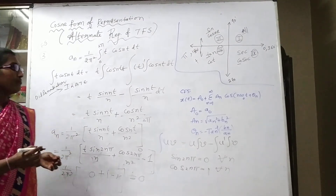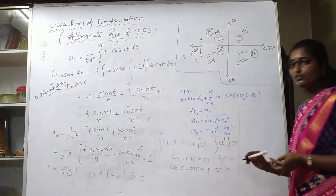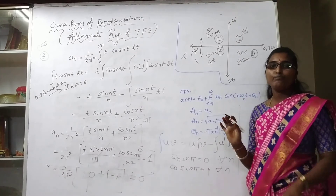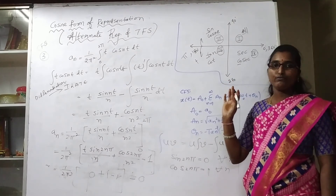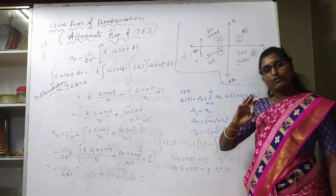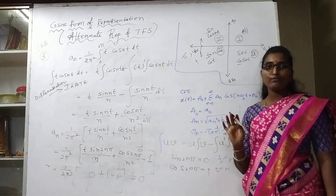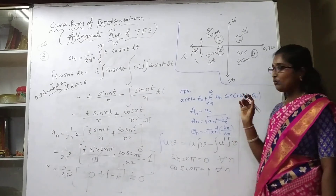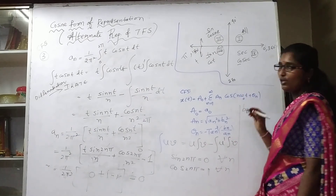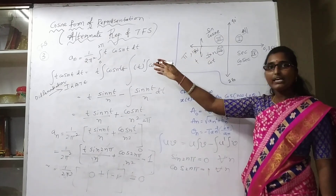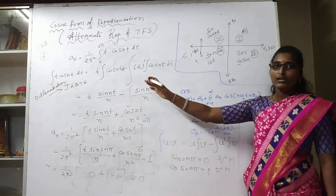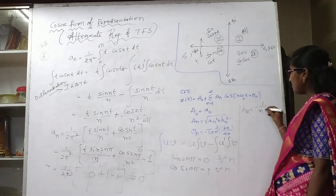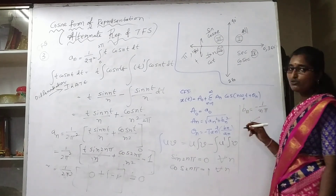For the first time I am giving a task for you. I have solved A₀ and Aₙ. Now try to calculate the Bₙ value yourself. Write the Bₙ formula, use the integral UV method, substitute the limits, and patiently solve. You should get the value −1/(nπ). Check it once.